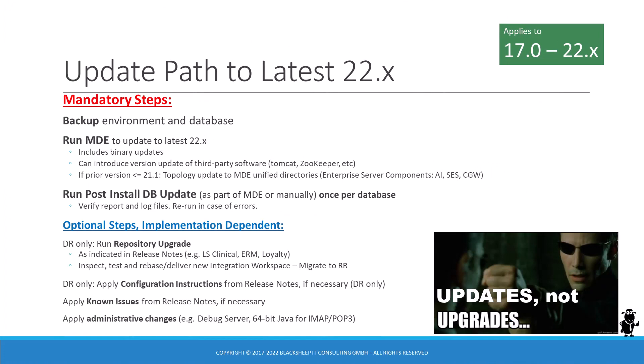Let's review the mandatory and optional steps for a successful update to the latest Siebel release. First, it is highly recommended to make a backup of the entire environment and the database. Then the Modular Deployment Engine needs to be run — it will lay down the new files to disk. If your Siebel version is 21.1 or older, you will also get a topology update to the MDE's unified directory structure, applicable to any Enterprise Server component such as AI, Siebel Server, or Gateway. It is also mandatory to run the post-install database update, which can be run automatically as part of the MDE or manually afterward. This has to be executed once per database and applies schema changes and imports seed data and OpenUI manifest data into the target database. Make sure to check the post-install DB update HTML report and the log files, and re-run in case of errors before you continue.